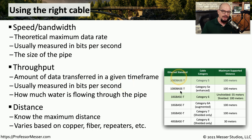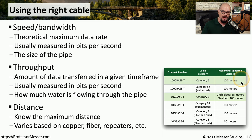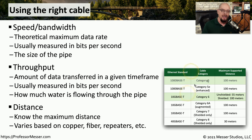With all of our ethernet standards and other types of connections, we have a maximum distance that our cable might be able to go. For example, with 1000BaseT, you can go 100 meters over category 5 or category 5E. All of these distances will be based on the standard you're using and the type of cable you're using.